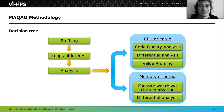This is the decision tree we follow. First we do profiling with the sampling engine, then isolate the loops of interest — the hotspots taking most execution time. Then we run different types of analyses: CPU-oriented and memory-oriented. For CPU orientation we use CQA, which uses a machine model to evaluate performance of a snippet of code. We also have a module for differential analysis, which removes instructions and generates multiple versions of the same loop to compare performance.